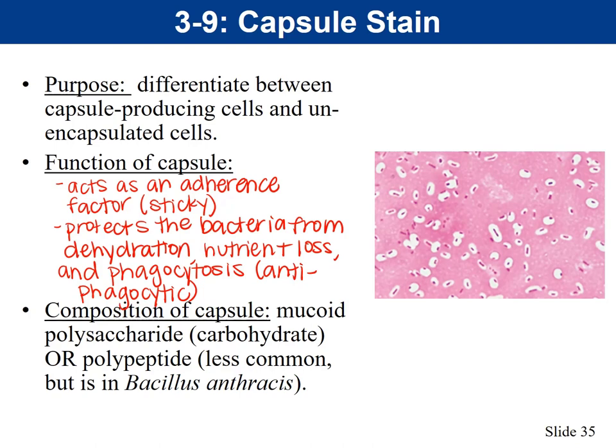What makes the capsule sticky? The composition of the capsule is that it's made of a mucoid, sticky polysaccharide, which is a carbohydrate — many sugars linked together. Very rarely, the capsule could be a polypeptide, meaning it's made of protein. This is the case in Bacillus anthracis, which causes anthrax — they have a unique polypeptide capsule. But most commonly capsules are made of this mucoid polysaccharide; it's a very slimy kind of sugar.